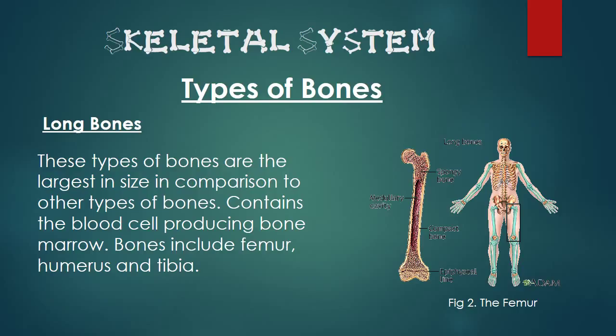The second type of bone is the long bone. These types of bones are the largest bones in size compared to the other types of bones and contain the blood cell producing bone marrow. These bones include the femur, humerus and tibia.